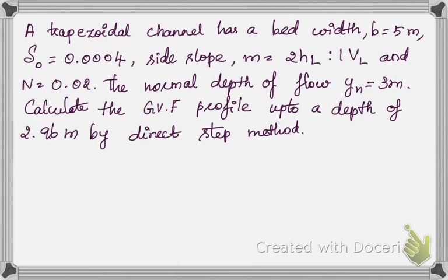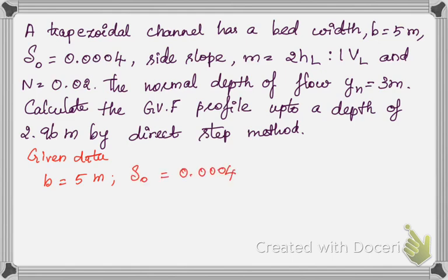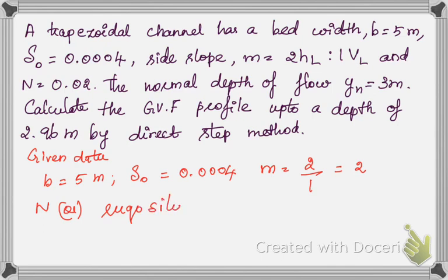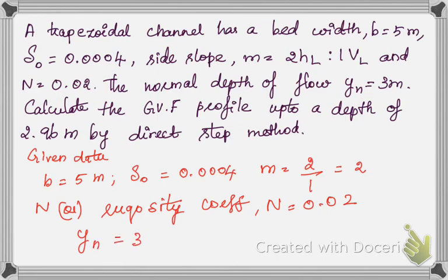A problem is given — as usual we are going to write the given data. It is a trapezoidal channel having a bed width B equal to 5 meter, S₀ equal to 0.0004, side slope M equal to 2 horizontal by 1 vertical, Manning's coefficient (rugosity coefficient) N equal to 0.02, and normal depth Y_N equal to 3 meter.